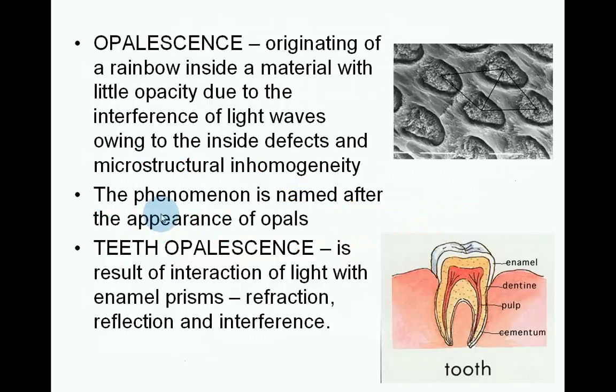Opalescence is the origination of a rainbow inside a material with little opacity, due to the interference of light waves owing to inside defects and microstructural inhomogeneity. The phenomenon is named after the appearance of opals. Tooth opalescence is the result of interaction of light with enamel prisms — reflection and interference.